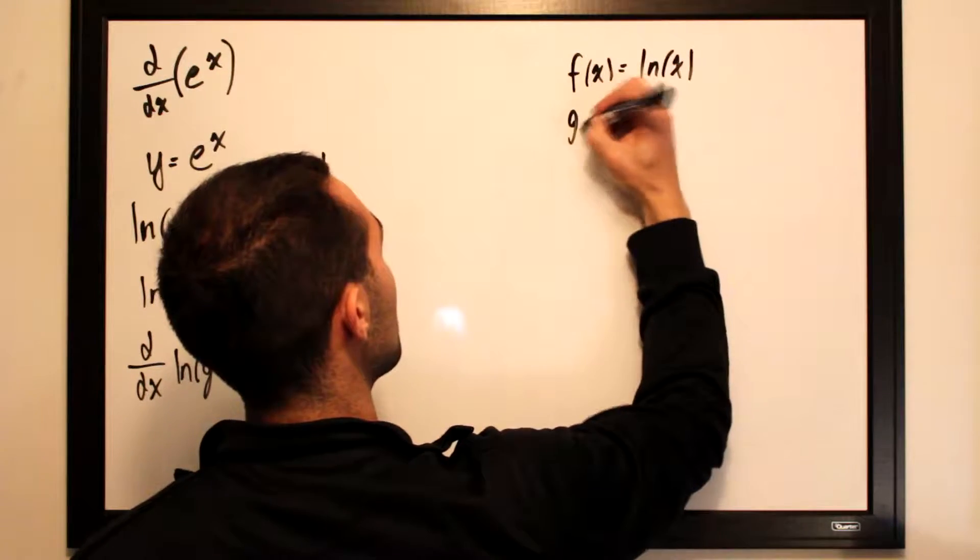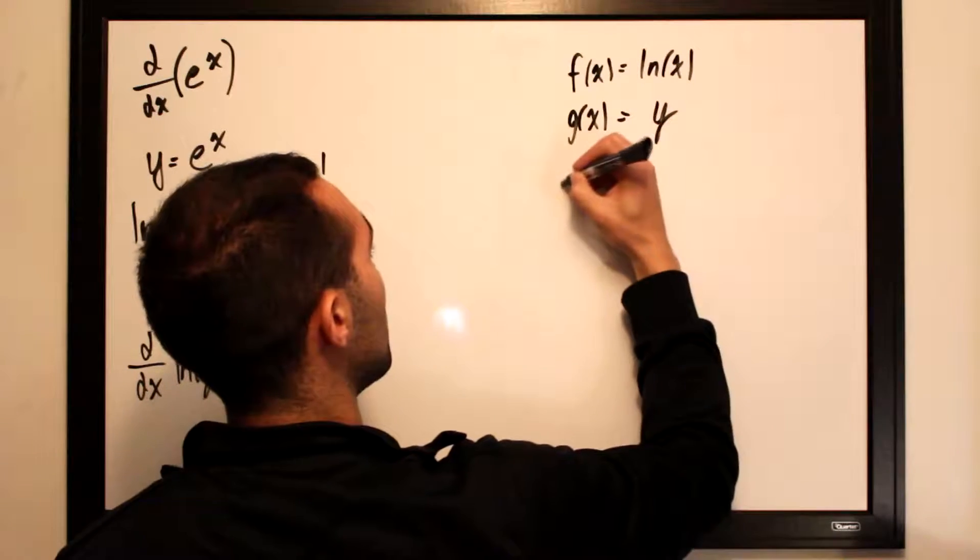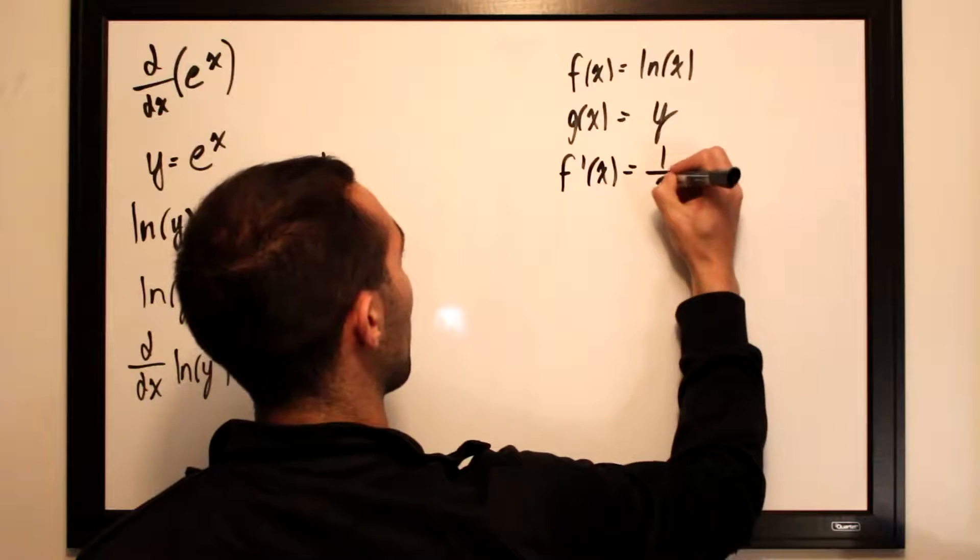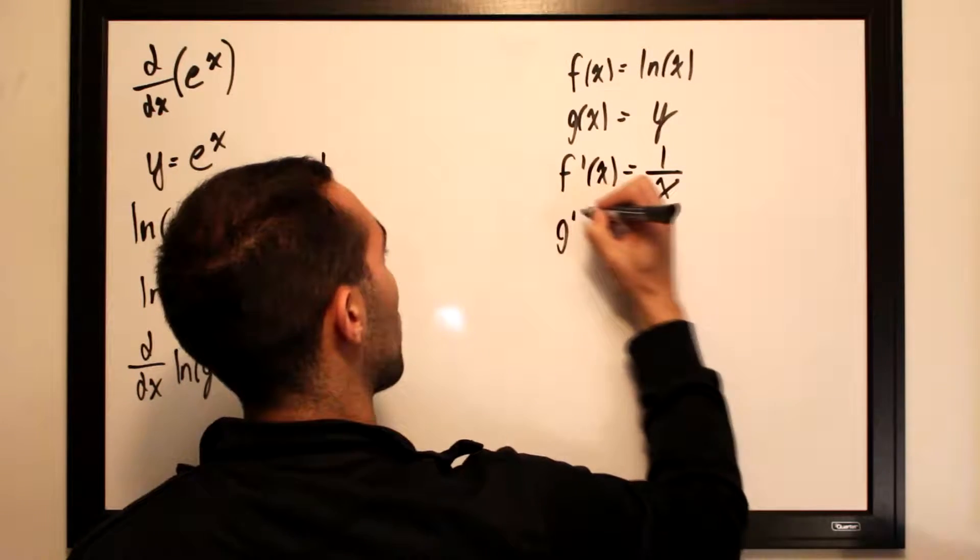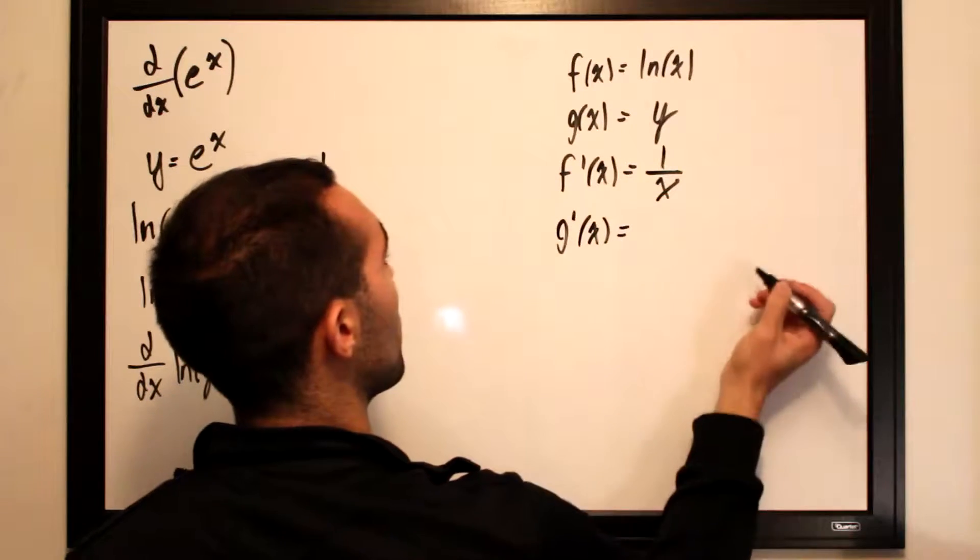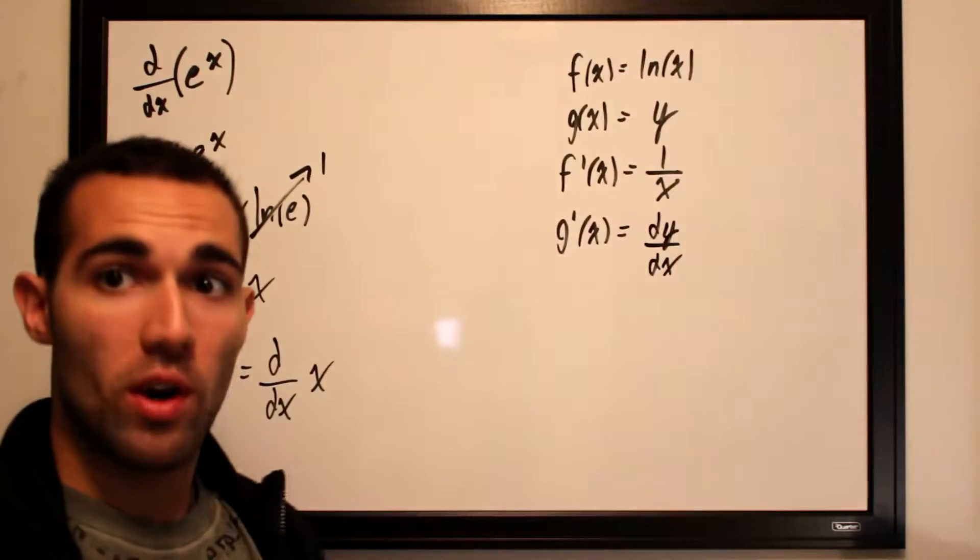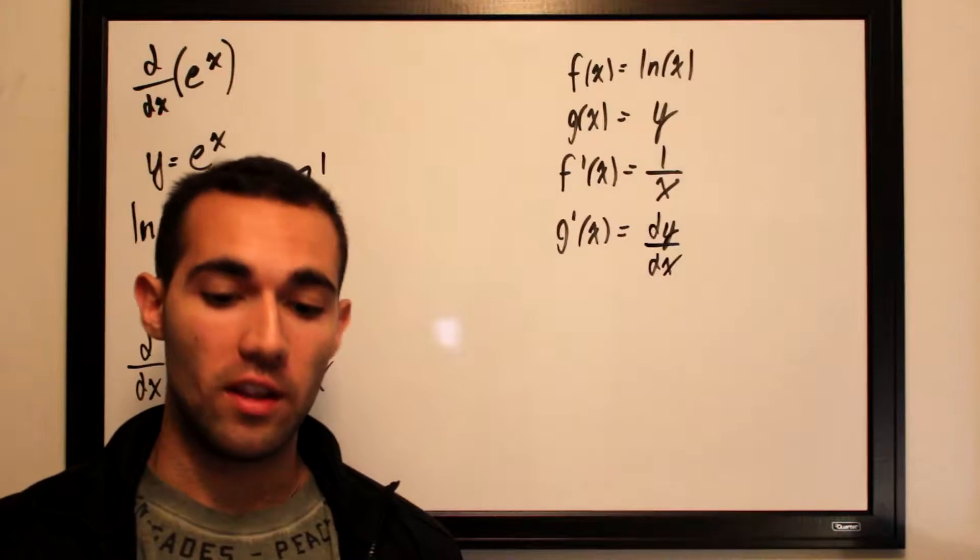Our inner function g(x) will be y. Our f prime is the derivative of our outer function, which is just 1 over x. And our g prime, which is the derivative of y, is just dy/dx, which is essentially what we will be solving for later on in the video.